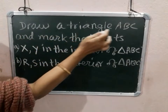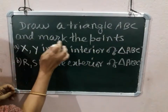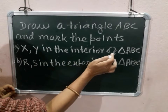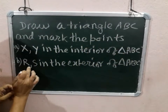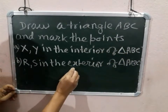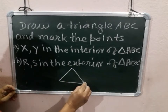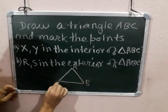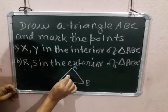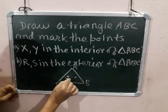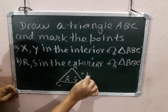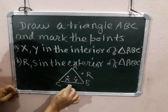Draw a triangle ABC and mark the points. First, mark points X and Y in the interior of triangle ABC. Second, mark points R and S in the exterior of triangle ABC. Interior points: this is X and this is Y. Exterior points: suppose R and S.